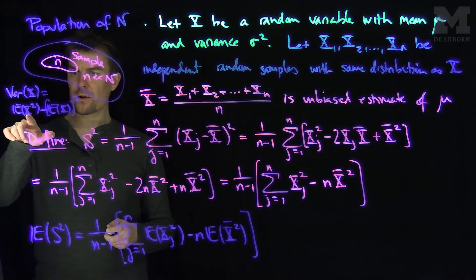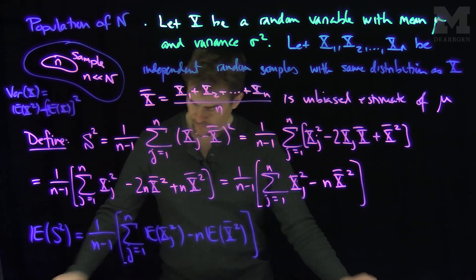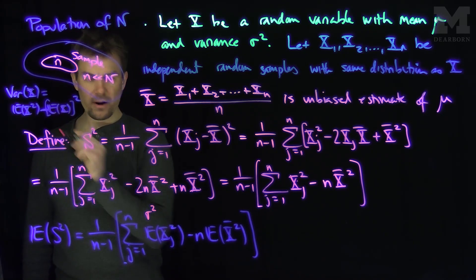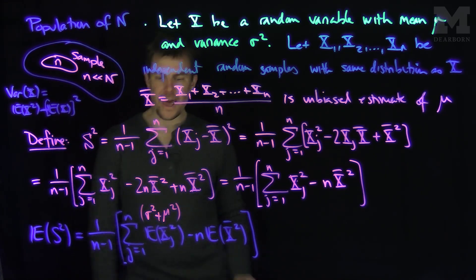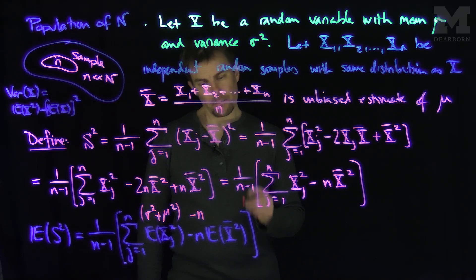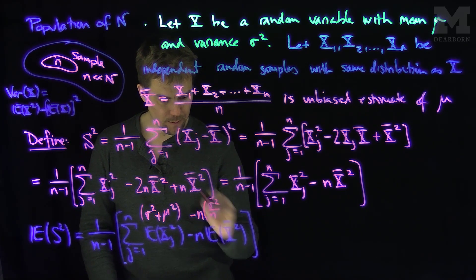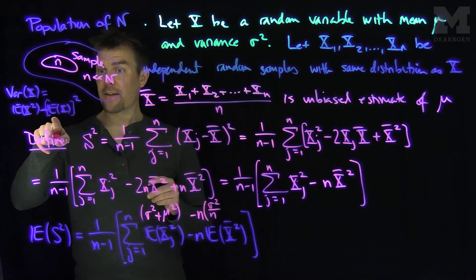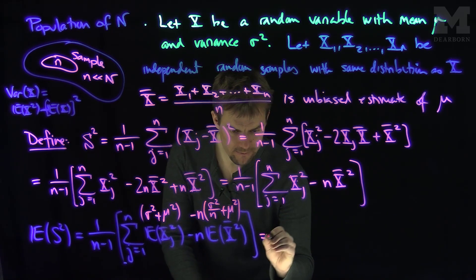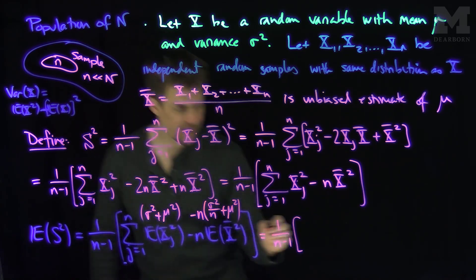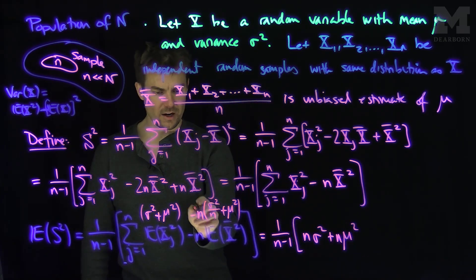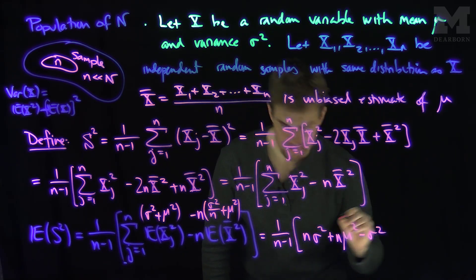Applying E[x²] = Var(x) + (E[x])² to each term: E[xj²] = σ² + μ², so summing n copies gives n(σ² + μ²). For x-bar: E[x-bar²] = Var(x-bar) + (E[x-bar])² = σ²/n + μ². So the second term becomes −n·(σ²/n + μ²) = −σ² − n·μ².